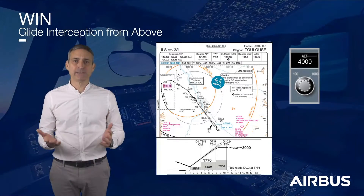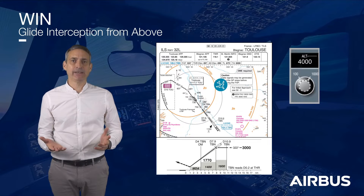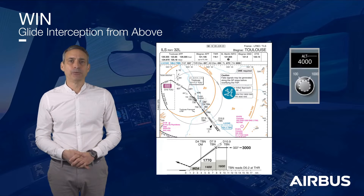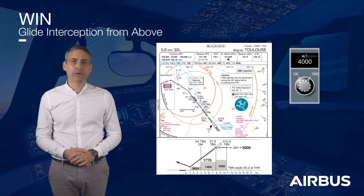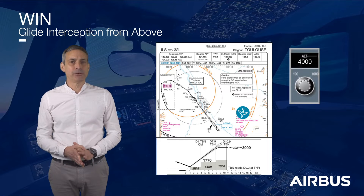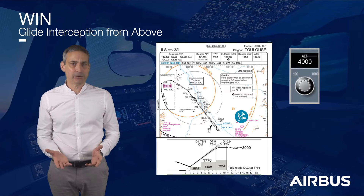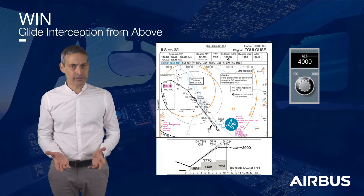In the proposed scenario, the aircraft is in heading and altitude mode at 4,000 feet and is being radar vectored to the ILS 32 Left in Toulouse. The intermediate approach altitude where the glide is normally intercepted is at 3,000 feet. The air traffic controller is unable to descend the aircraft down to 3,000 feet due to low-level traffic.